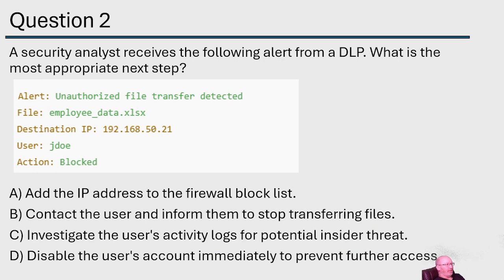Question number two: a security analyst receives the following alert from a DLP — data loss prevention system. What is the most appropriate next step? The alert shows an unauthorized file transfer detected: employee data in an XLS format, a destination IP address still within our network, but unauthorized. It could be an insider threat or someone who gained access to the system.